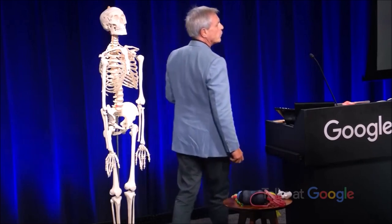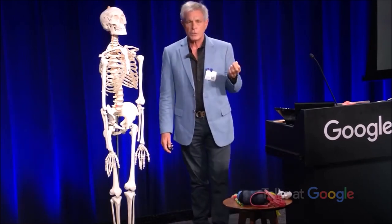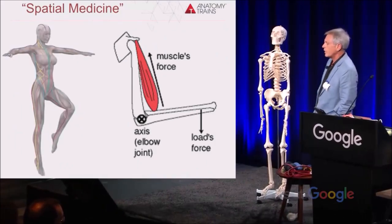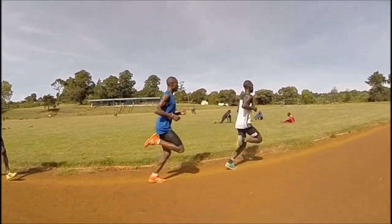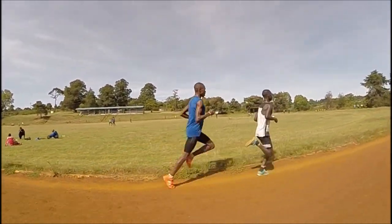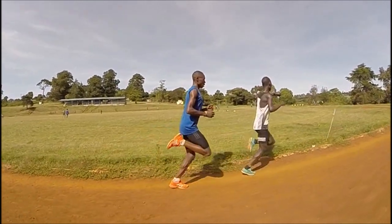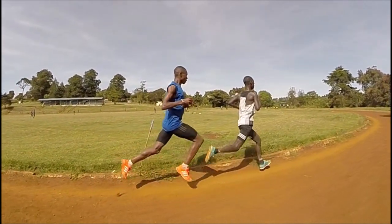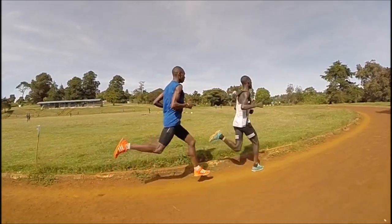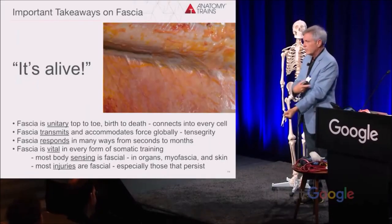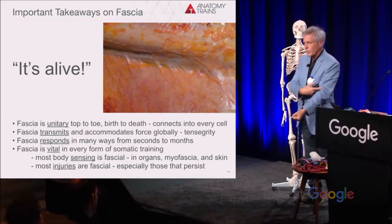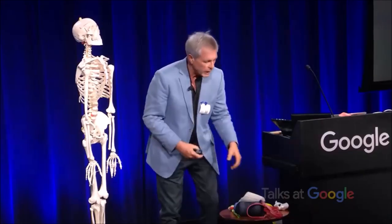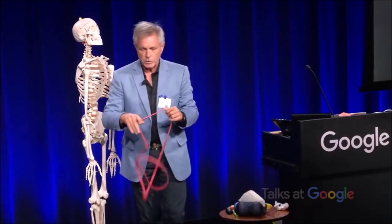Looking at spatial medicine, we see the model I was talking about: a muscle goes across a joint and that's how it works on the body. I would suggest instead the actual system is one big unitary net that transmits and accommodates forces — not just tendons going from bone to bone, but a whole system, like a three-dimensional cobweb, pulling in on a bone system that is pushing out.